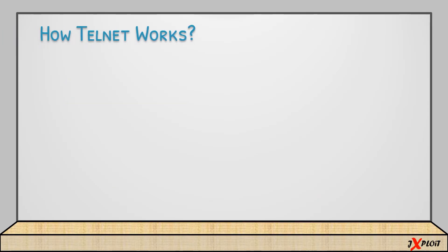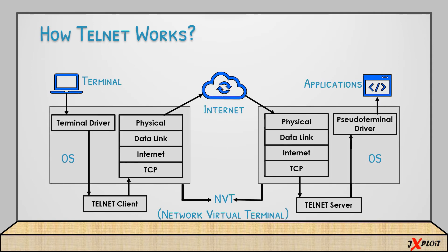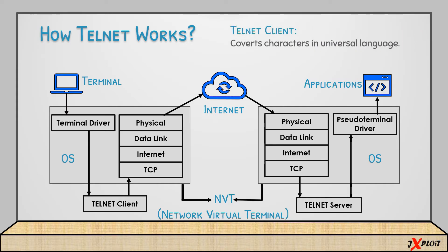Now let's see how telnet works. The diagram shows the basic operation of telnet. It looks complex but it is very easy to understand. Everything starts with the terminal — whatever commands the user gives will be through the terminal. The terminal driver captures all the keystrokes and forwards them to the telnet client. The telnet client then converts those characters into a universal language to ease data transmission, because the client may be running Windows while the server may be running Linux, and irrespective of the operating system, they should be able to communicate properly.